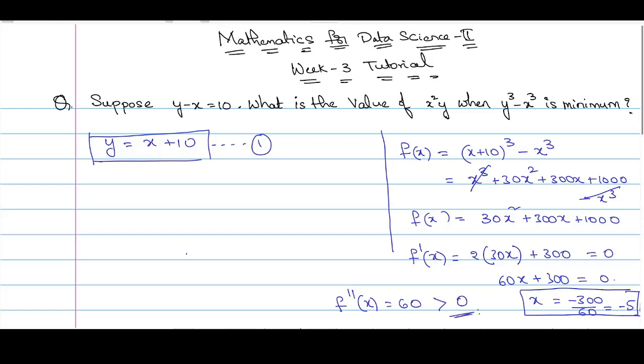Recall the properties of local minima and local maxima. If our f double dash of x is greater than 0, then it is local minima, which implies x is equal to minus 5 is a local minima. If it is less than 0, then it would have been a local maxima.